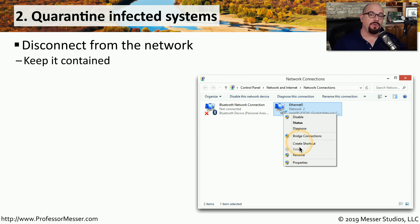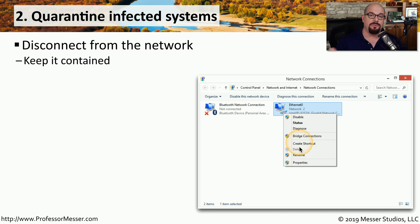If you think a computer is infected, one of the first things you should do is quarantine that system. That means making it a self-contained system that cannot communicate to any other devices on the network. Disconnect from the ethernet network or the wireless network so this system cannot communicate to other devices on that same network.